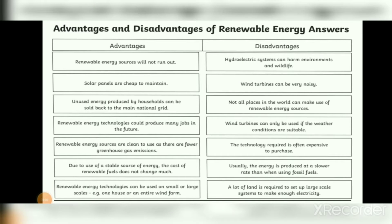We will discuss the advantages of renewable energy. Number one: renewable energy sources will not run out. Number two: solar panels are cheap to maintain. Number three: unused energy produced by households can be sold back to the main national grid.